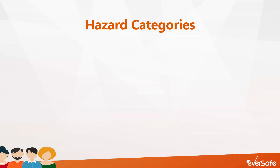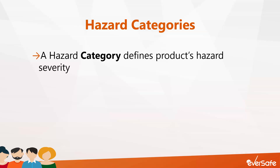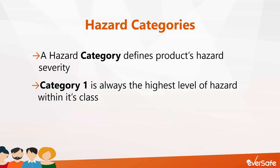In WHMIS 2015 hazard classification, every hazard class has at least a single category, sometimes referred to as a type. In a few cases, subcategories are also specified, identified with a number and a letter. The category tells you about how hazardous the product is — in other terms, the hazard severity. Category 1 is always the greatest level of hazard within its class. If category 1 is further divided, category 1A within the same hazard class is a greater hazard than category 1B. There are a few exceptions — for example, for the gases under pressure hazard class, the hazard categories are compressed gas, liquefied gas, refrigerated liquefied gas, and dissolved gas, which relate to the physical state of the gas when packaged and don't describe the degree of hazard.